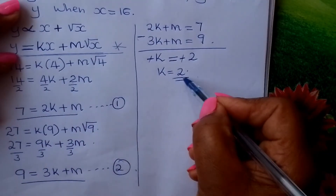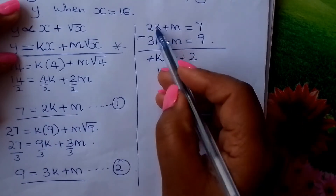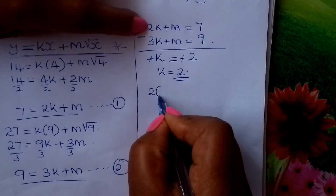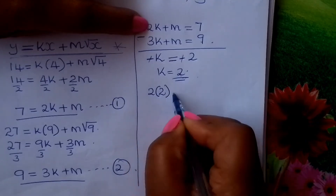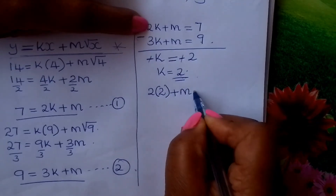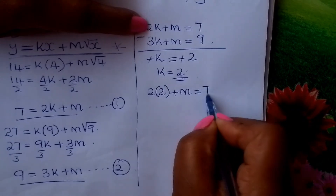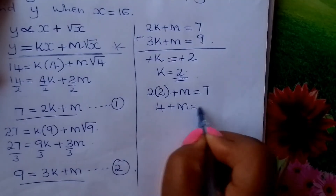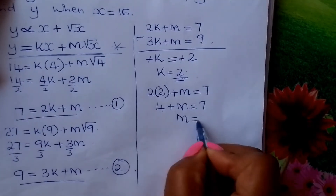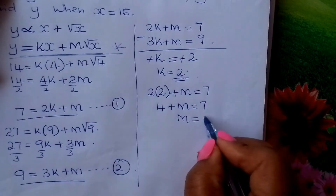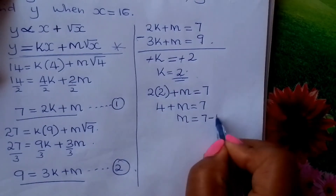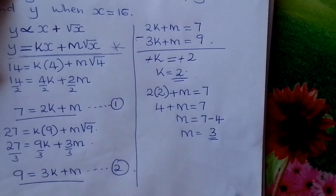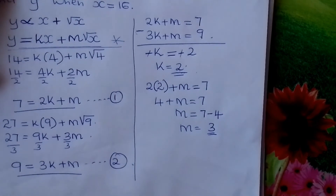Now that K is 2, we substitute back into the first equation to find M. We write: 2 times 2 plus M equals 7, so 4 plus M equals 7, therefore M equals 3. We have now found both proportionality constants.